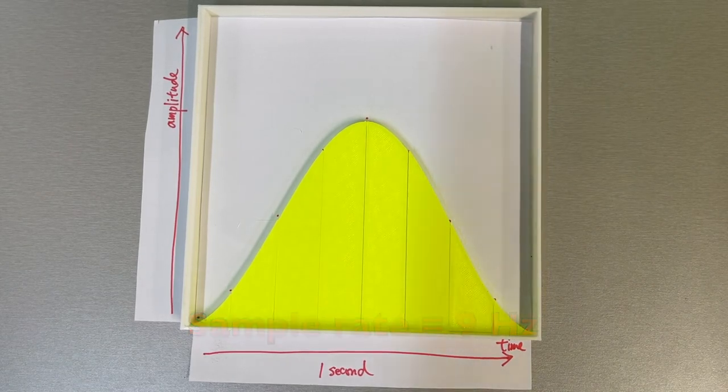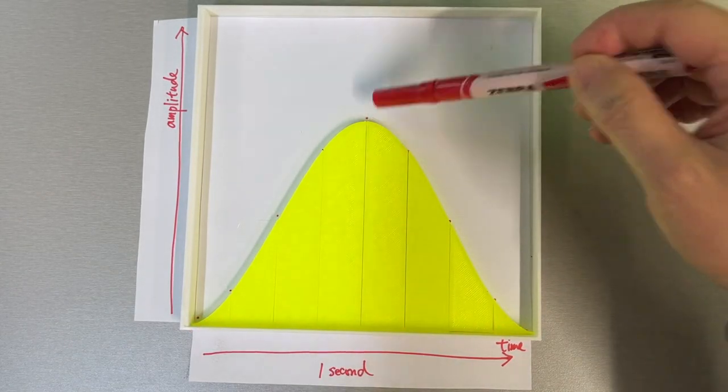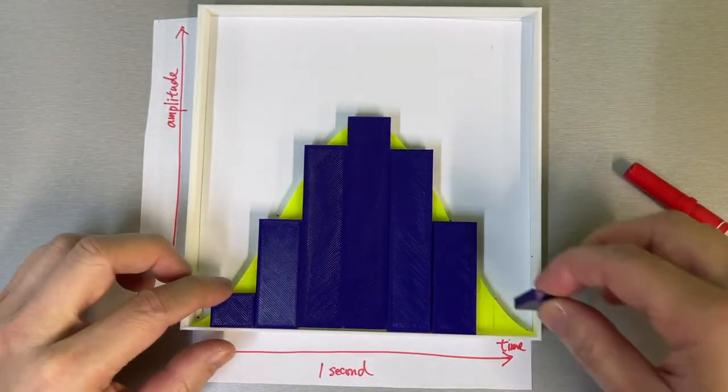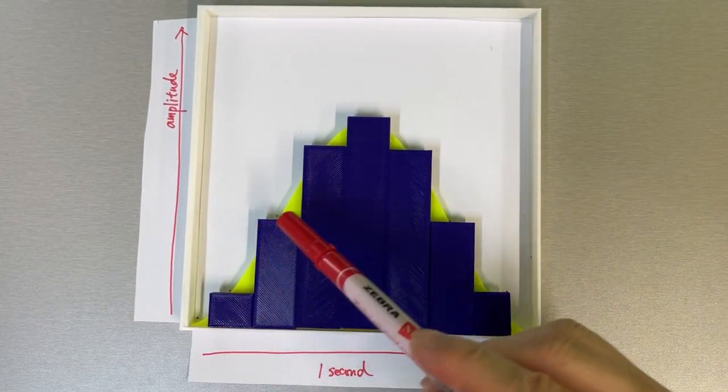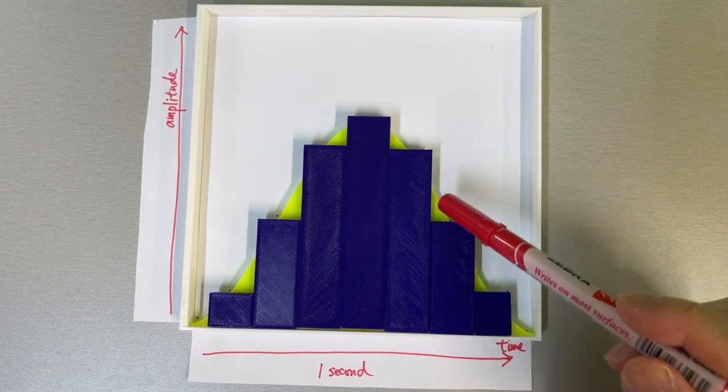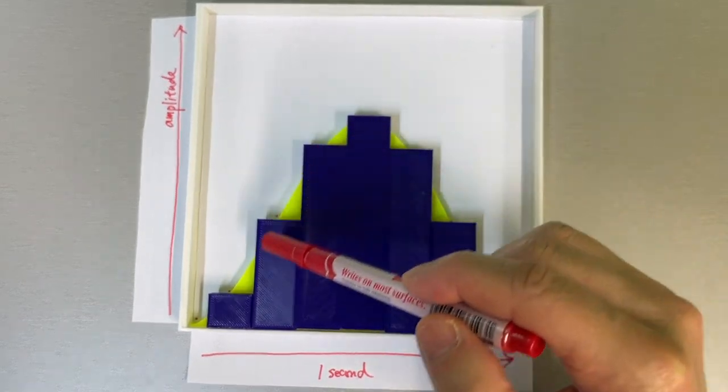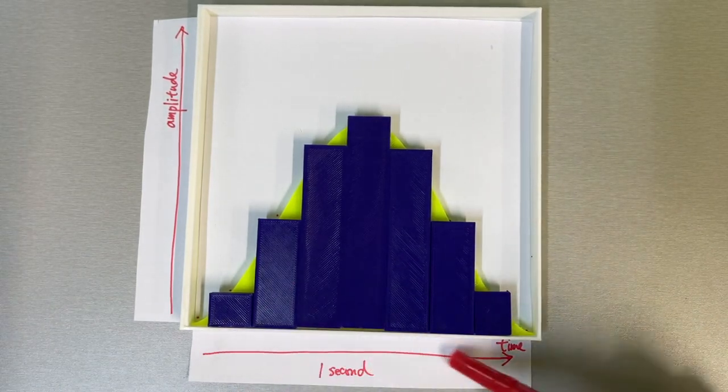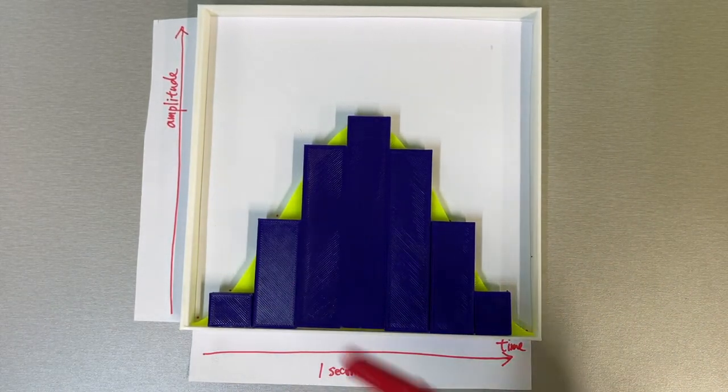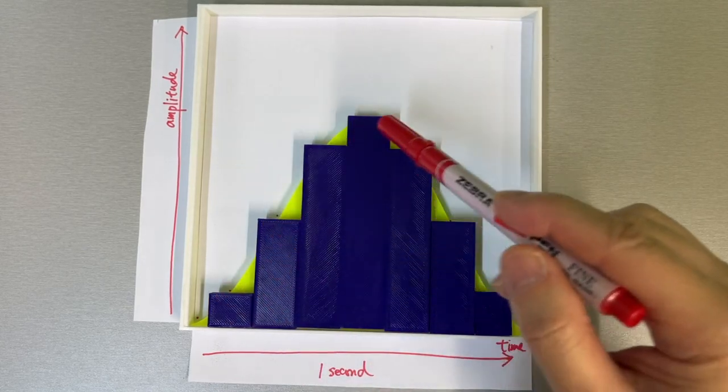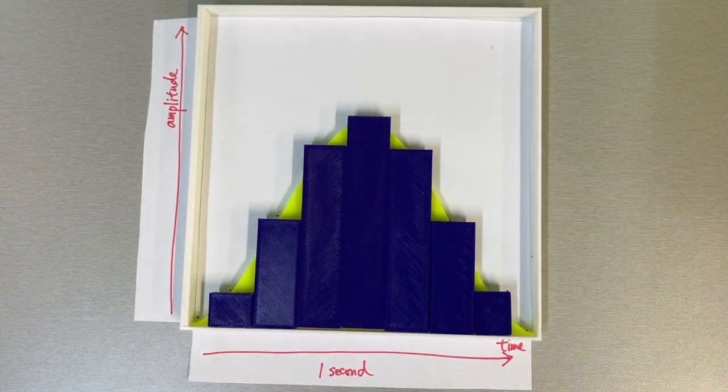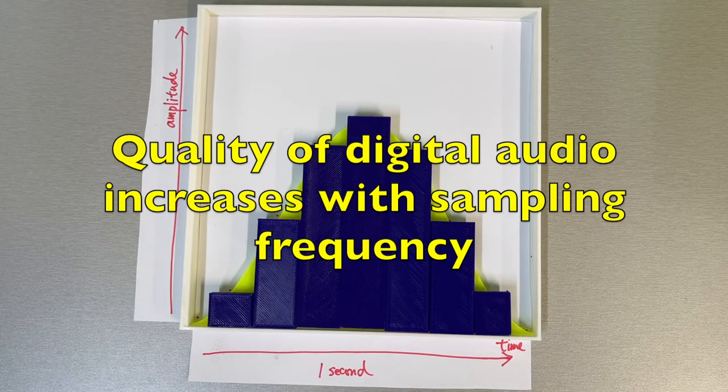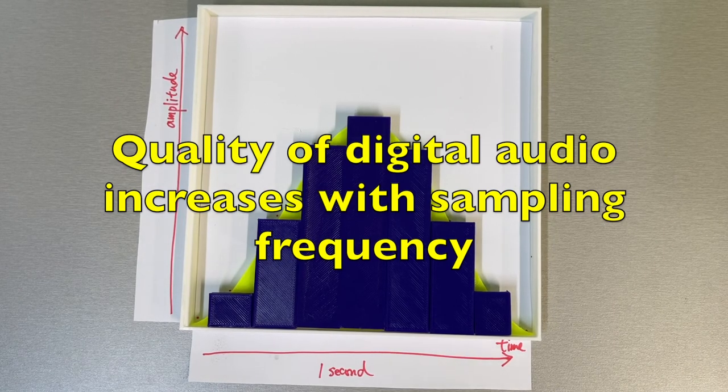And then we represent the height of each sample by a vertical bar. And then we can present like this. And now we can see that this digital waveform looks more or less the same as the original waveform because we have more vertical bars if we increase the sampling frequency. That means we take more samples in one second. And therefore we have a conclusion. The quality of a digital waveform increases with the sampling frequency.